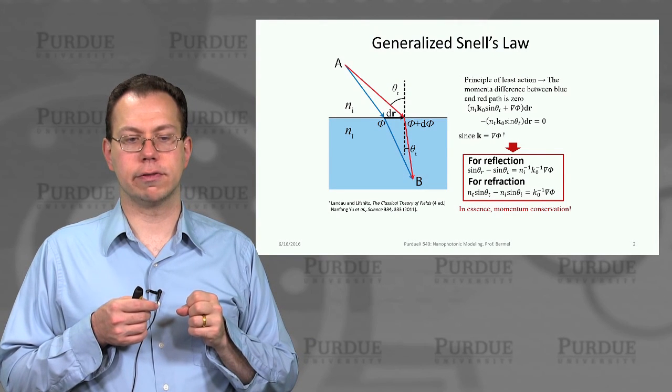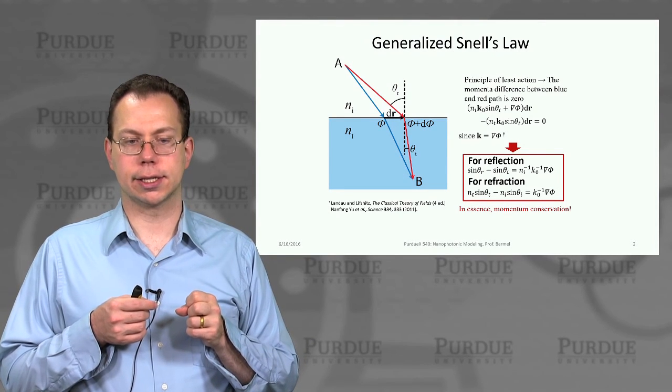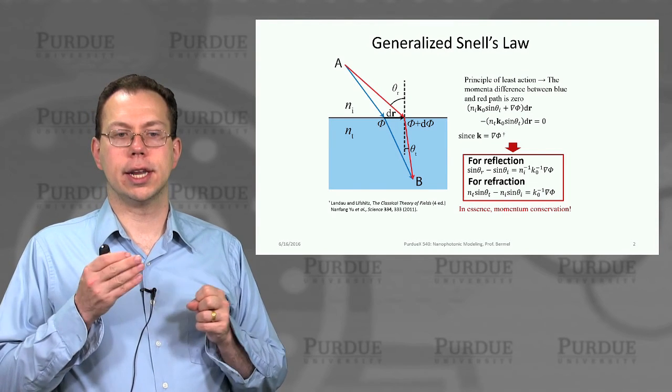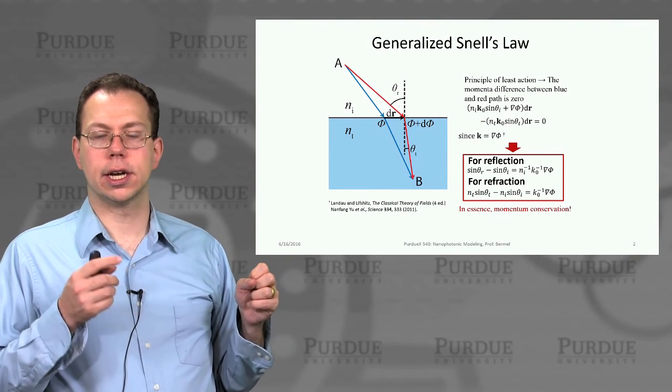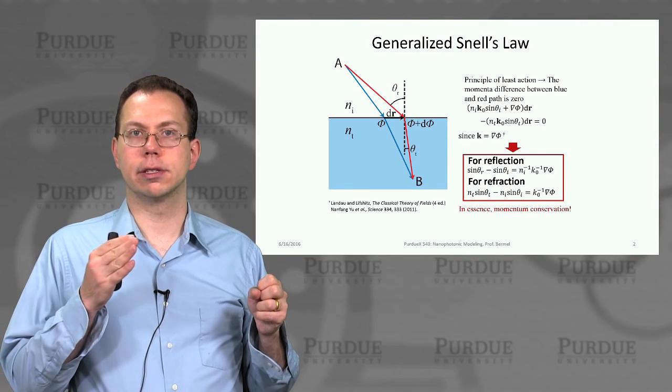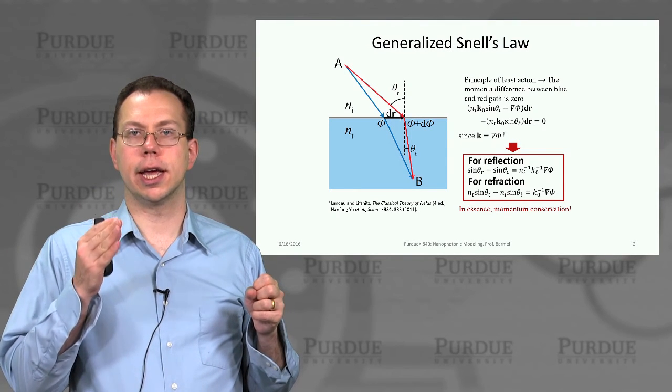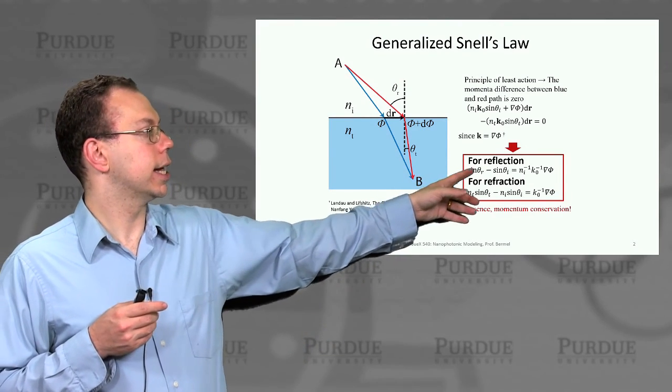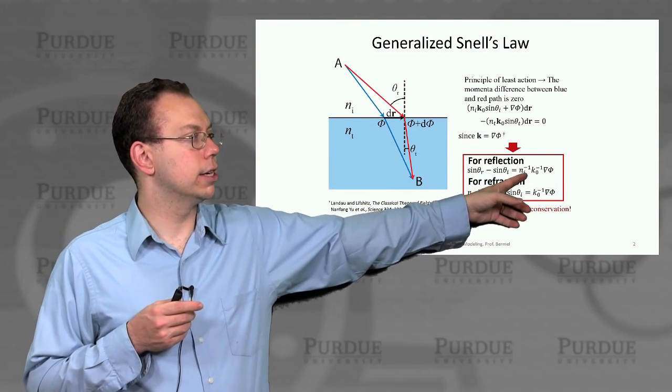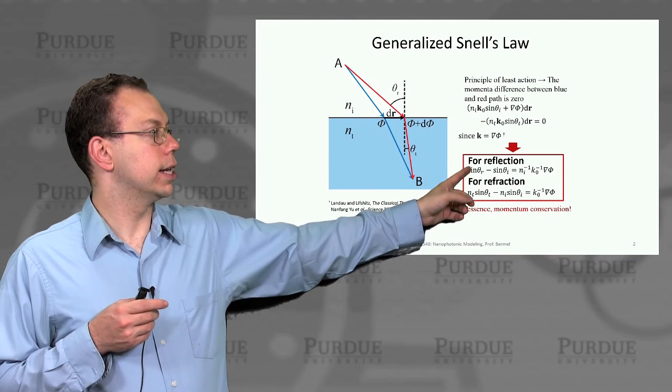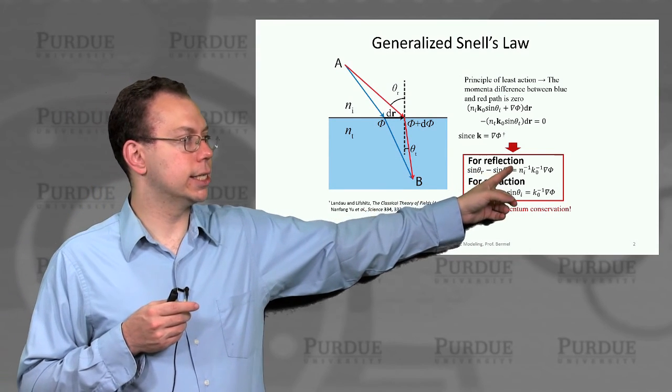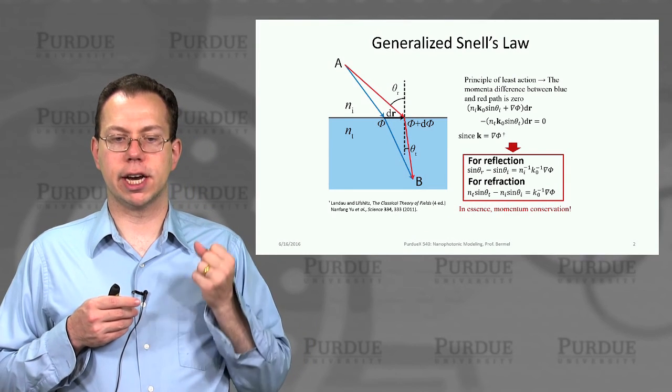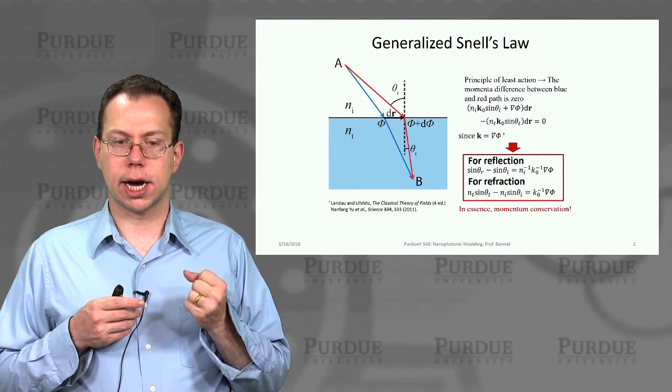And so that path depends on the gradient of the phase as you go across the surface, delta phi over delta x, or delta r in this case. And that actually takes the standard law of reflection, specular reflection, in which the angle of reflection equals angle of incidence, and adds this extra term that depends on the gradient of phi. So you end up with sine theta r minus sine theta i, which would normally be zero,